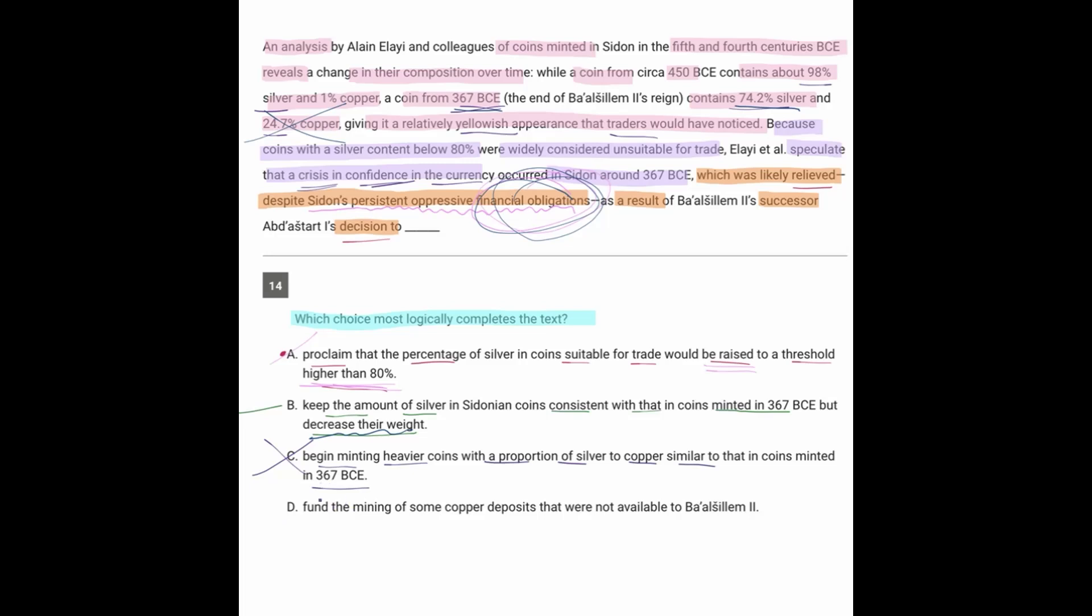And looking at D, the decision to fund the mining of copper deposits that were not available. Well, the problem was that the proportion of silver was too low. So adding copper was not going to help anything. So when the dust settles on this question, the answer here is B.